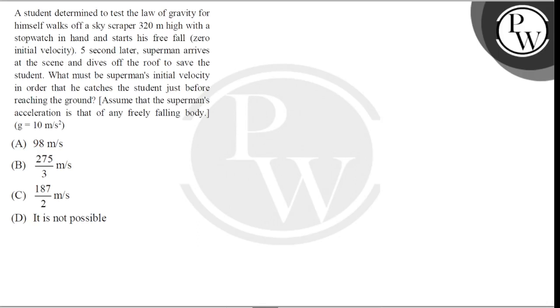A student determined to test the law of gravity for himself walks off a skyscraper 320 meter high with a stopwatch in hand and starts his free fall with zero initial velocity. 5 seconds later, Superman arrives at the scene and dives off the roof to save the student. What must be Superman's initial velocity in order that he catches the student just before reaching the ground? Assume that Superman's acceleration is that of any free falling body.